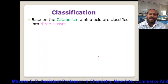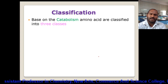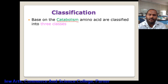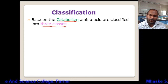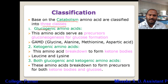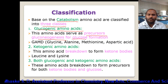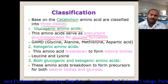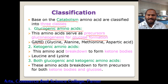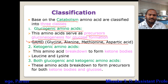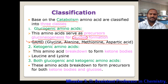The last classification depends on catabolism — the reactions that happen due to amino acids — and divides them into three classes. First are glucogenic amino acids, which serve as precursors for glucose formation. During glucose synthesis these amino acids are utilized. Examples include glycine, alanine, methionine, and aspartic acid — abbreviated as GAMD.